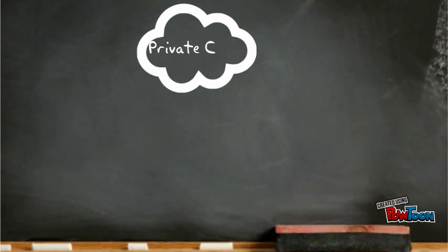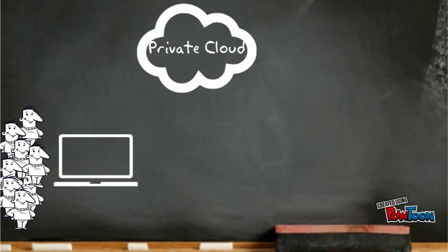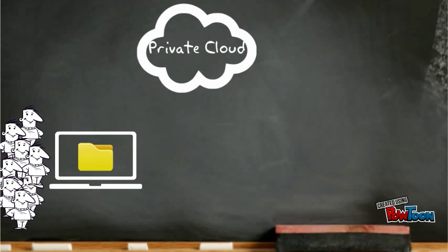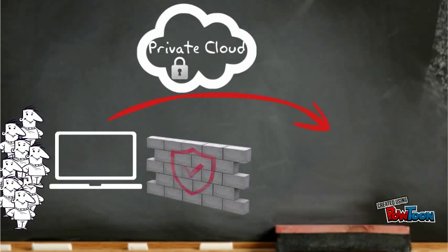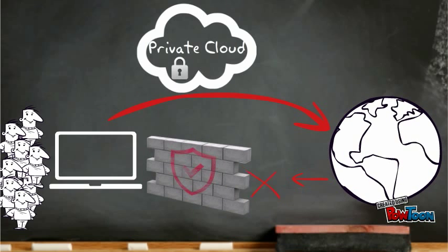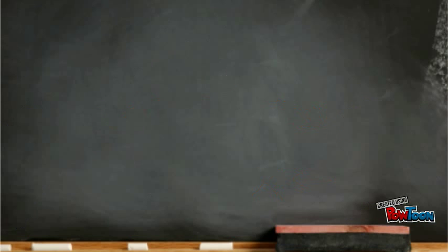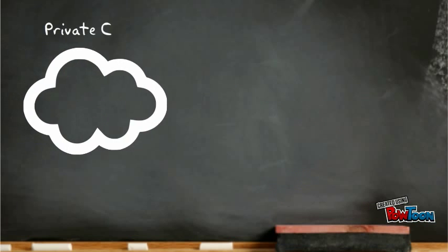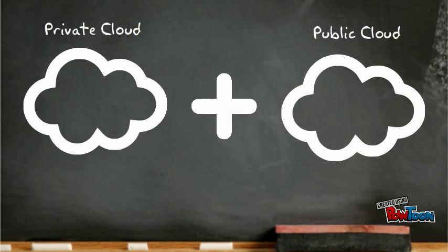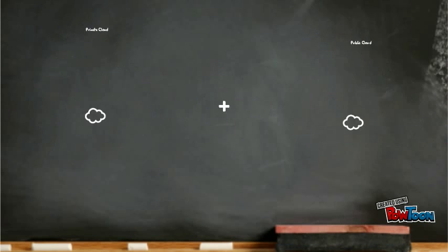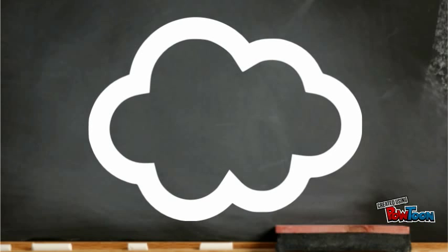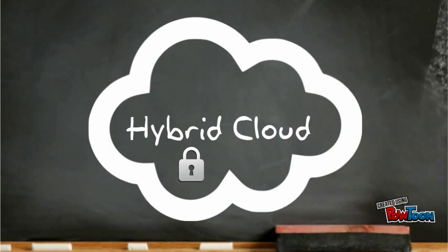Private cloud means using a cloud infrastructure solely by one customer or organization. The content, which is protected by a firewall, is only available to that customer or organization. Hybrid cloud is using both private and public clouds depending on their purpose. For example, public cloud can be used to interact with customers while keeping their data secured through a private cloud.